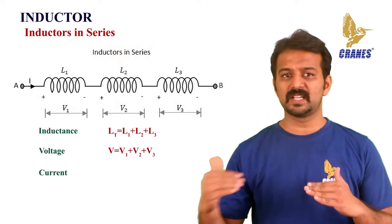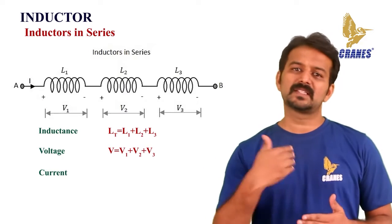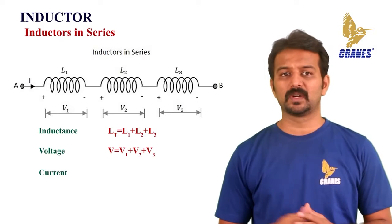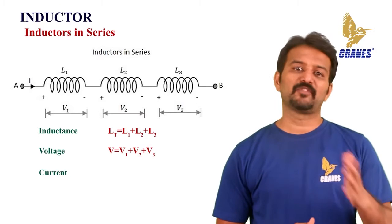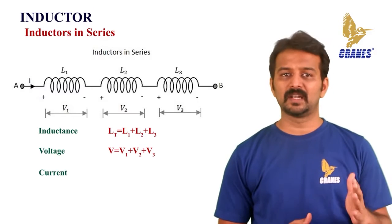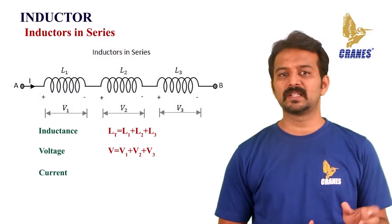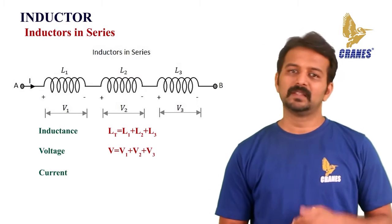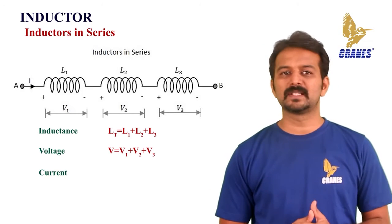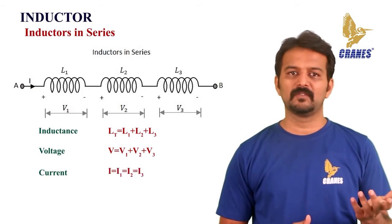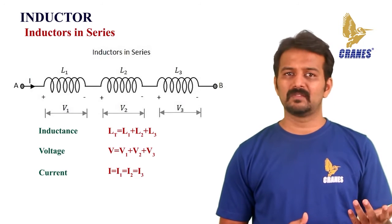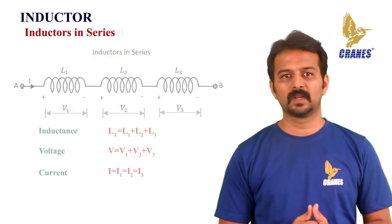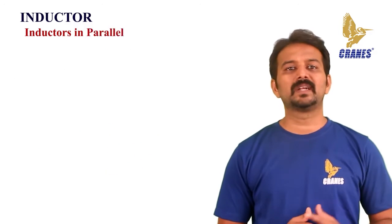For current in a series inductor network, the current is the same throughout all inductors: I = I1 = I2 = I3.